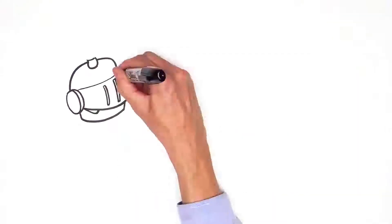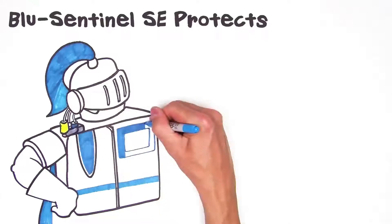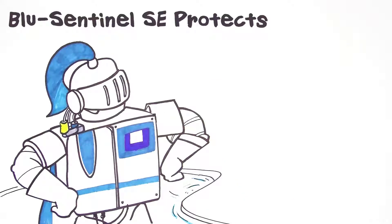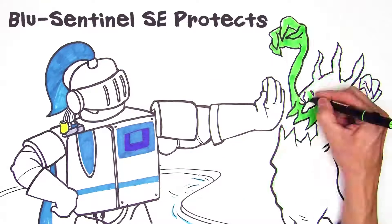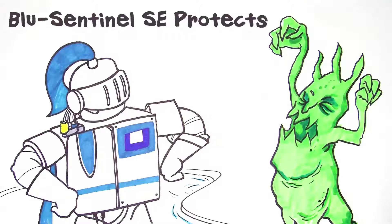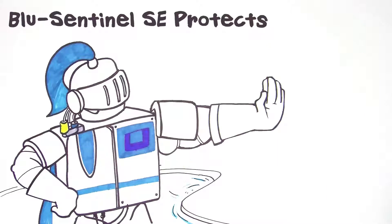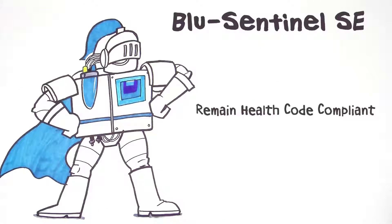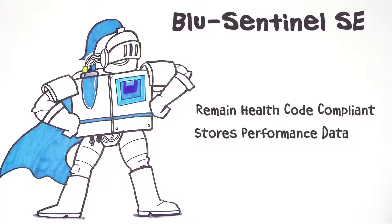Like an ever vigilant guardian, your Blue Sentinel controller not only protects your pool from nasty microorganisms, it lets you know should an issue arise. It also helps pools remain compliant with health codes and performance data is stored for any required reporting.